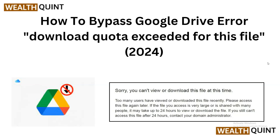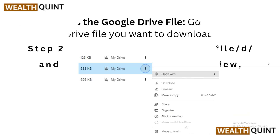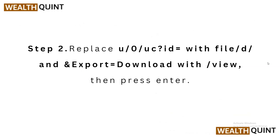Step 1: Access the Google Drive file. Navigate to the Google Drive file you wish to download. Once you locate the file, take note of the URL. Step 2: Modify the URL. You will need to make a slight modification to the URL — replace it with what is shown on my screen — and after making these changes, hit Enter.